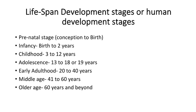Lifespan development stages, or human development stages: Prenatal stage — conception to birth. Infancy — birth to 2 years. Childhood — 3 to 12 years. Adolescence — 13 to 18 or 19 years. Early adulthood — 20 to 40 years. Middle age — 41 to 60 years. Older age — 60 years and beyond.